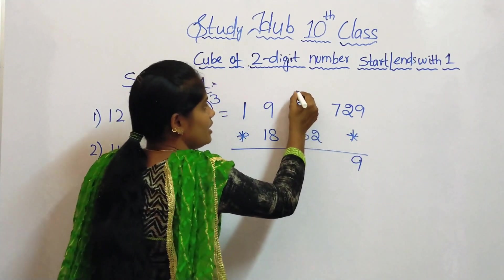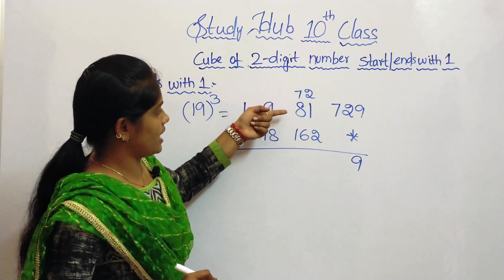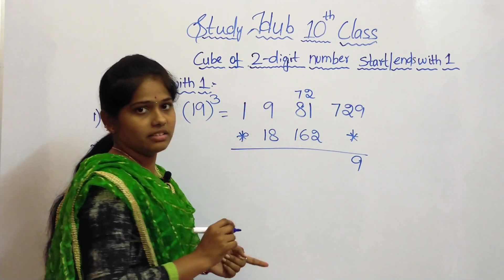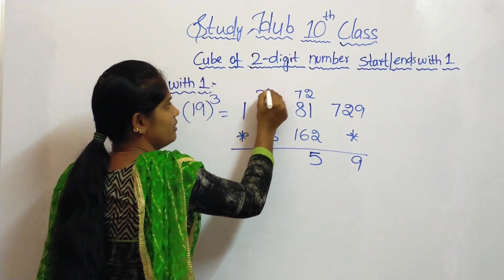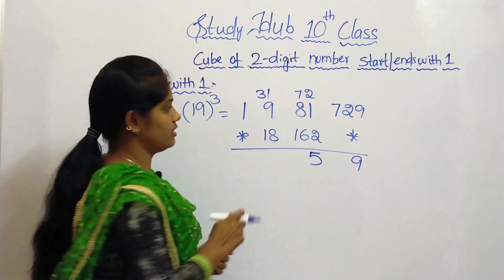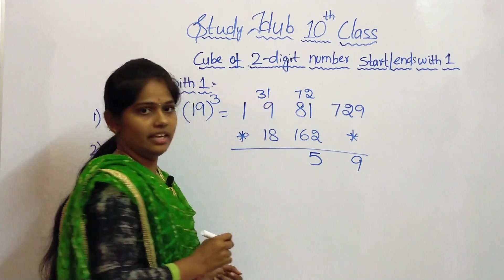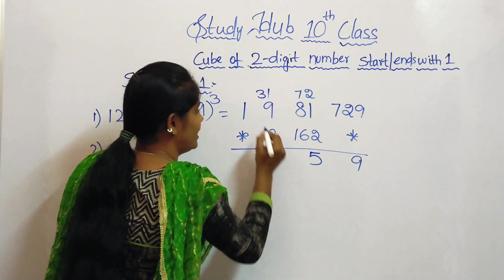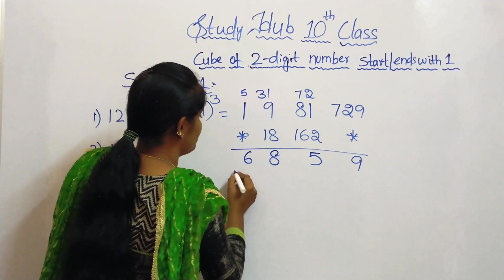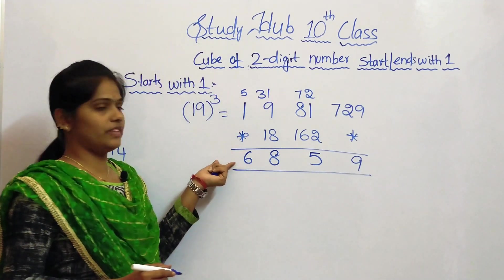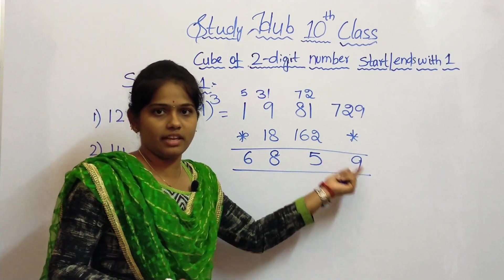So write 9 here and carry 72. 72 plus 81 plus 162 gives 315 — write 5 here and carry 31. Then 31 plus 9 is 40, and 40 plus 18 is 58 — write 8 here and carry 5. 5 plus 1 is 6. So this is the cube of the number 19. 19 cubed is 6859.